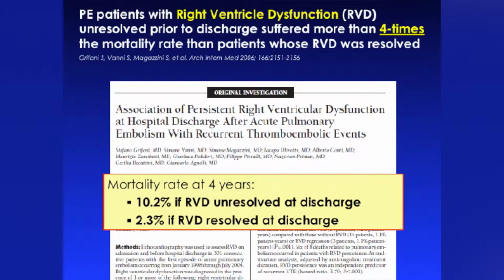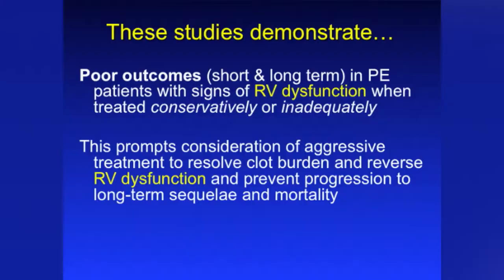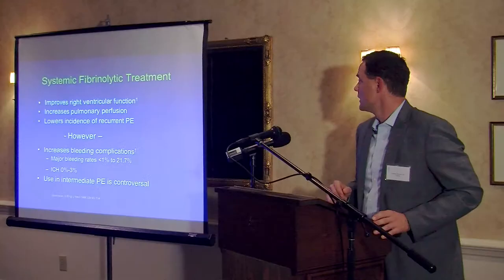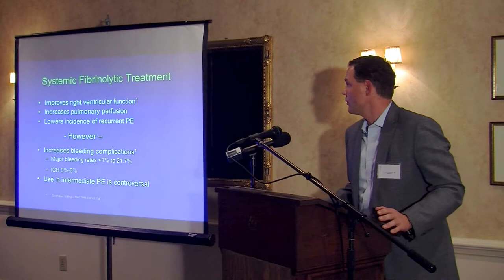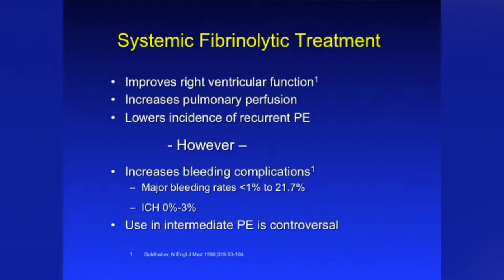These studies demonstrate poor outcomes in patients with ongoing RV dysfunction at or after discharge. This prompts consideration of aggressive treatment to resolve clot burden and reverse right ventricular dysfunction. Systemic fibrinolytic treatment — about 100 milligrams of TPA through the vein — does improve right ventricular function, increases pulmonary perfusion, and lowers recurrent PE. However, major bleeding rates are reported anywhere from 1 to 21 percent, with intracranial hemorrhage in 0 to 3 percent. So applying it to everyone with sub-massive PE is controversial.